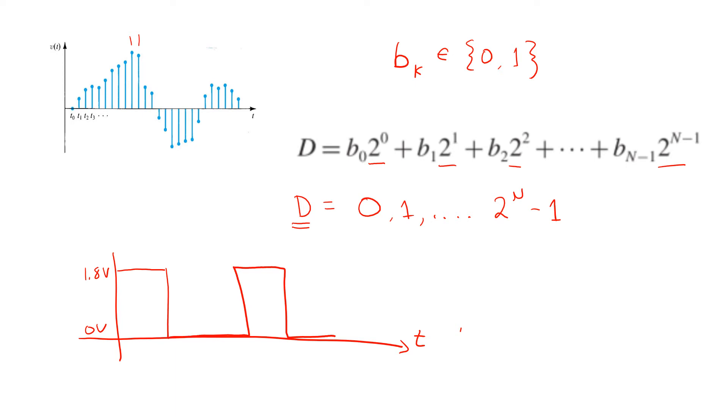Note that if any of the voltages is corrupted by a small amount of noise, that bit would still be interpreted as a 1 in this case, or a 0 down here. So the underlying signal D wouldn't change at all.